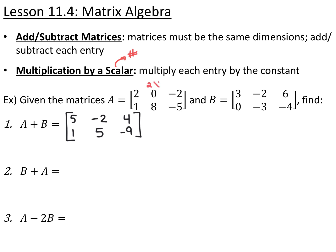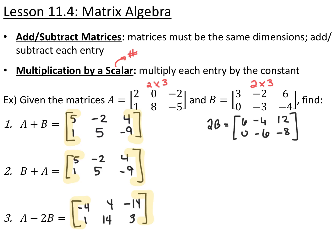We can add these matrices because both are 2 by 3. For B plus A: matrix addition is commutative, so B plus A equals A plus B, giving the same result. For A minus 2B: first multiply every entry of B by the scalar 2 to get 6, negative 4, 12, 0, negative 6, negative 8. Then subtract that from A to get negative 4, 4, negative 14, 1, 14, 3.